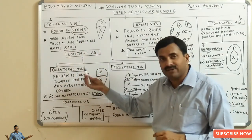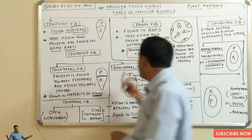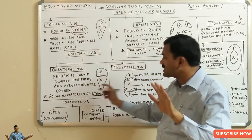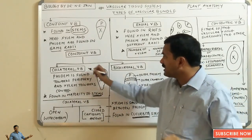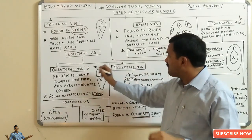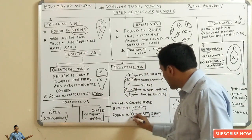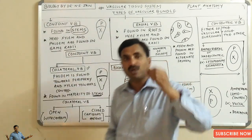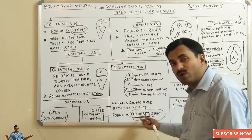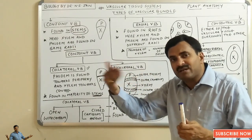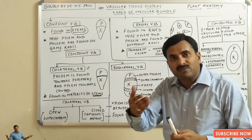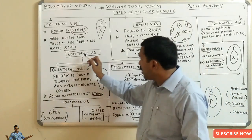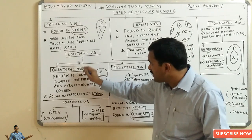Conjoint vascular bundles are divided into two categories: the collateral vascular bundle and the bicollateral vascular bundle. In the majority of stems, the collateral condition is found. However, in the Cucurbita stem — a family that includes watermelon and other similar plants — the vascular bundles are bicollateral.